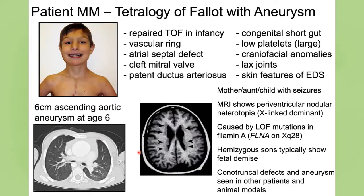You're going to see things that are clearly syndromic but difficult to explain. My suggestion is to look for patterns. In one young man who had repair of tetralogy of Fallot in infancy, a cleft mitral valve, congenital short gut, and low platelets, he turned out to have a mutation in a gene called filamin A. The reason you don't see many people like this young man is because in most circumstances, a male with a mutation in filamin A would experience fetal demise — this is an X-linked gene, and if it's abnormal in men, it's generally incompatible with life. Somehow this young man survived but has very severe manifestations, including seizures.